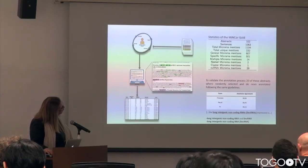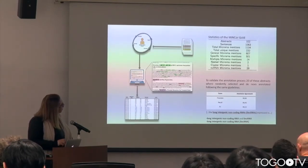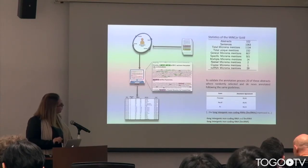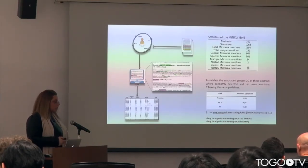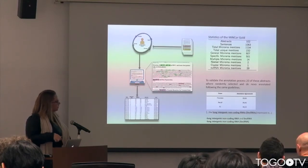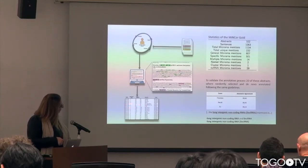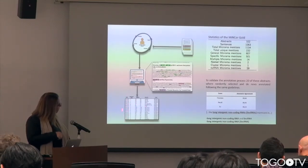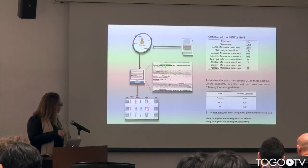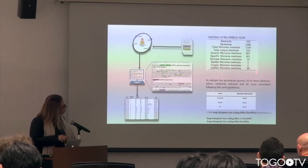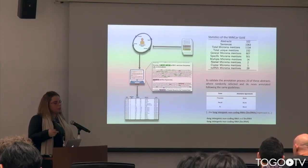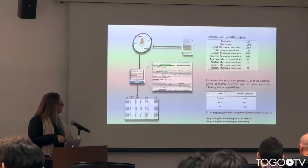For the MINICOR gold standard, an annotator performed the annotation using a web interface. The data was then downloaded and parsed, normalized with the PubMed ID. We have whether it's from the abstract or the title text, the offset, dimension, and the class. These are some of the statistics of the corpus. The annotation process was validated by randomly selecting 20 abstracts and then re-doing the annotation.